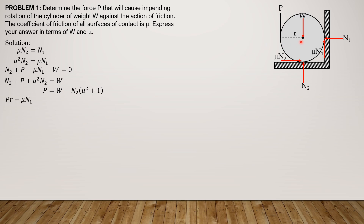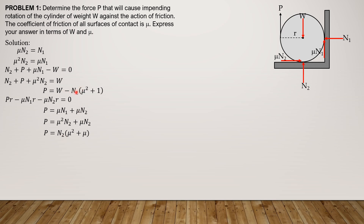Summing moments about O equals 0: P·R minus mu·N1·R minus mu·N2·R equals 0. Canceling R: P equals mu·N1 plus mu·N2. Replacing N1 with mu·N2 gives P equals mu²·N2 plus mu·N2, so P equals N2 times (mu² plus mu). Substituting N2 equals (W minus P) divided by (mu² plus mu) into the moment equation.